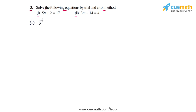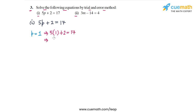In part one, the equation is 5P plus 2 equal to 17. We will give different values to the variable P. Let's take P equal to 1. Substituting P equal to 1, we get 5 times 1 plus 2 equal to 17. That gives us 5 plus 2 equal to 17, but 5 plus 2 is 7, and that does not match with the RHS 17. So P equal to 1 does not work.